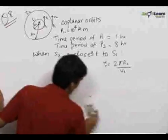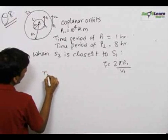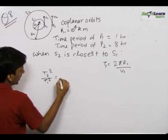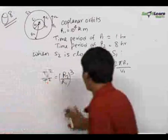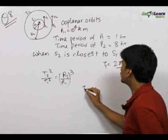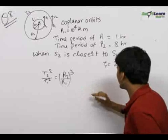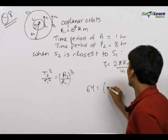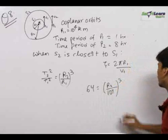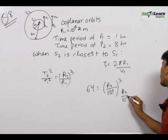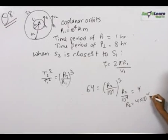Since both satellites are revolving around the same planet, we have T2²/T1² = (R2/R1)³. From this, T2/T1 = 8, therefore 8² = 64 = (R2/10⁴)³, giving R2/10⁴ = 4. Therefore R2 = 4 × 10⁴ kilometers.